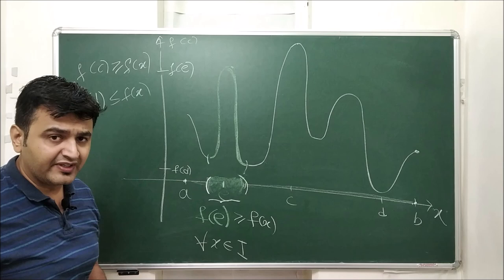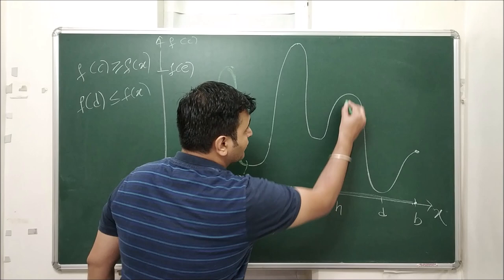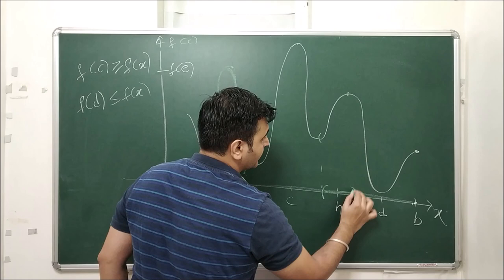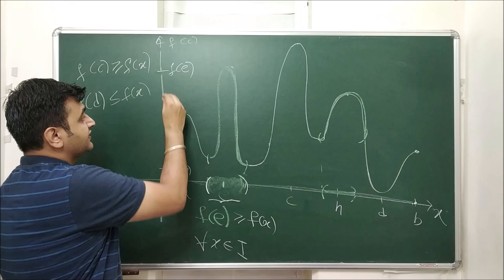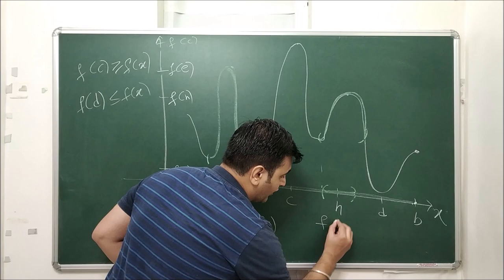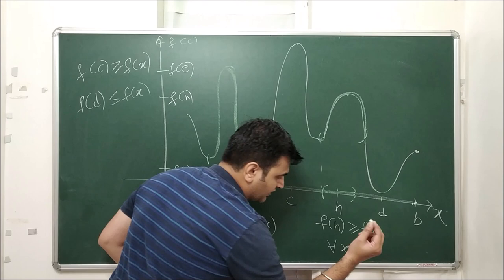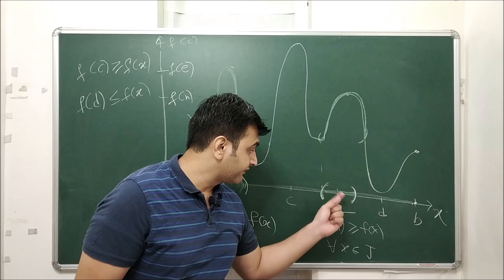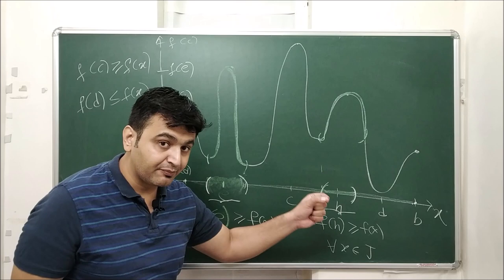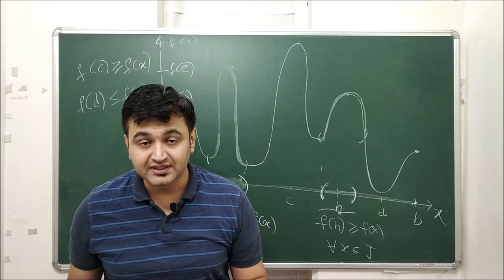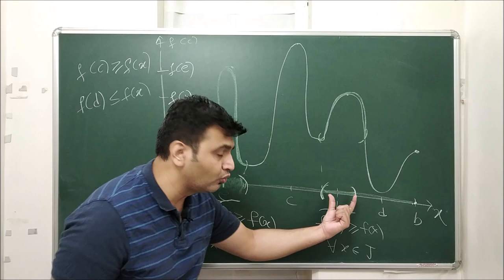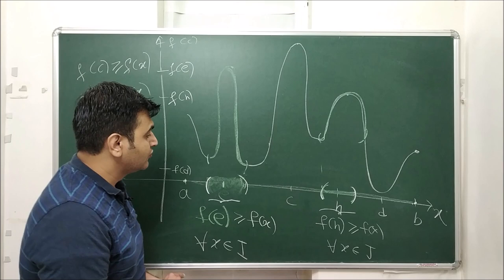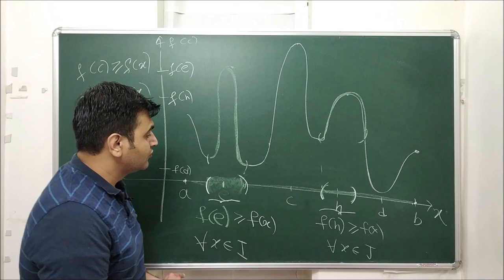A function can have more than one local maximum. If I take point H, and restrict myself to a small interval around H, then f(H) ≥ f(x) for all x in that interval J. Whenever you can find an open interval containing a point such that this inequality holds, the function has a local maximum at that point. The word 'local' reflects that the maximum holds locally, not globally.